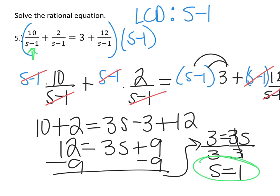I would get 1 minus 1 in the denominator. And that equals 0. And we know that we can't have a 0 in the denominator, that would be an undefined answer. So this means that we actually have no solution because s equaling 1 would give us a 0 in the denominator.